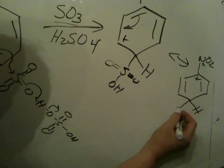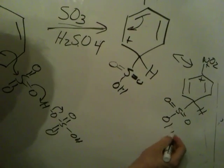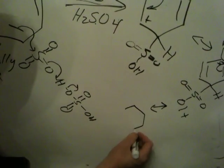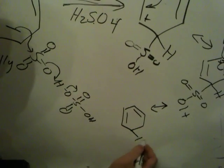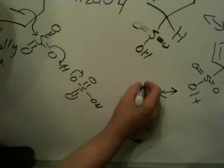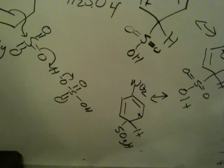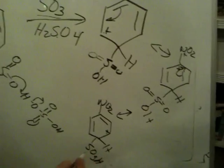This will also happen with the ortho. Finally, I can delocalize and draw one more form, which looks like this. So what's happened here? We've got plus charge there, plus charge at the site bearing the charge.